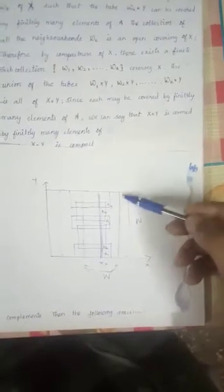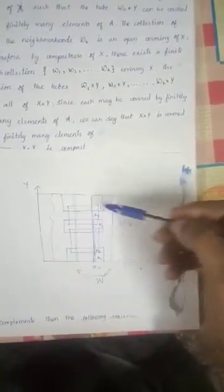Since the slice x₀ cross Y is compact, it is covered by finitely many elements of script A — call them a1, a2, a3, ..., am. Find the union of all these sets a1, a2, ..., am and name it N. This N is also an open set. This open set N is shown here, and this open set N contains the slice x₀ cross Y.